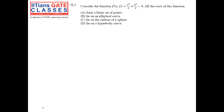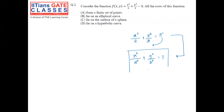Coming towards the next question: consider a function f(x, y) = x²/2 + y²/3 − 5, and all the roots of this function are asked. If you look at the function x²/2 + y²/3 − 5 = 0, we bring the 5 to the other side and we can clearly see that this equation can be reduced to x²/10 + y²/15 = 1, which is the standard form of an elliptical equation. So we select option B, which says that all the roots of this function lie on an elliptical curve. Option B is correct.